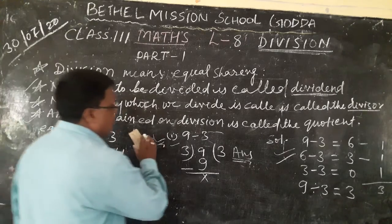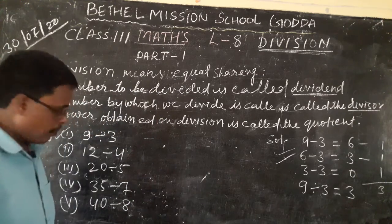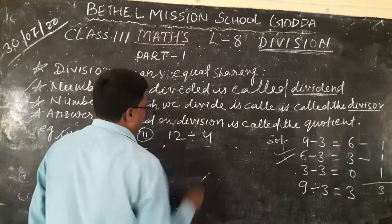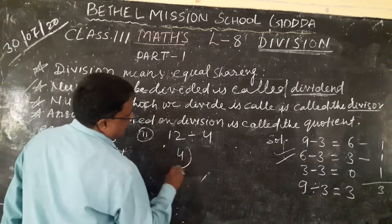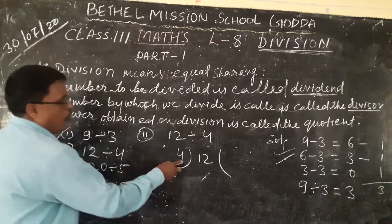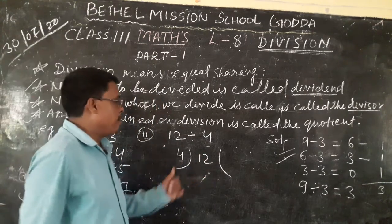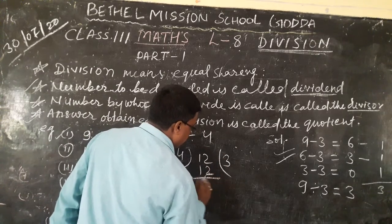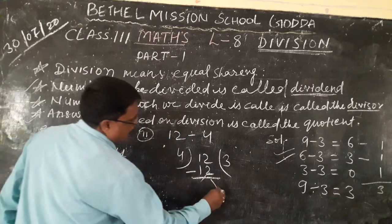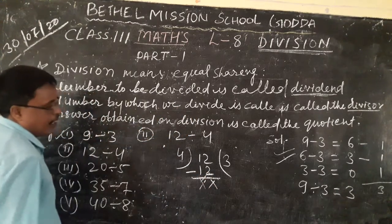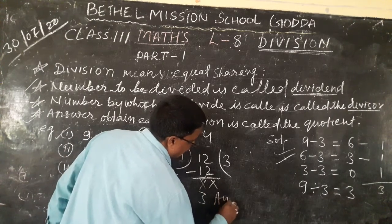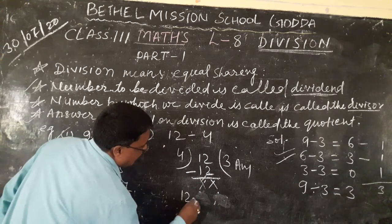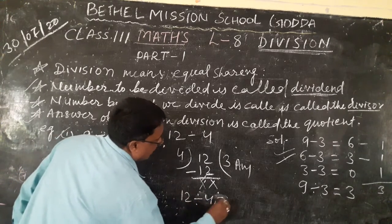Next question, number 2: 12 divided by 4. Write 4 here and 12 here. From the table of 4, how many times will 4 go into 12? 4 times 3 equals 12. So 3 is the answer. 12 divided by 4 equals 3.